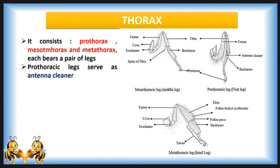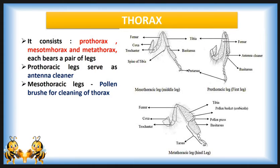In addition to locomotion, legs in honeybee are modified to perform additional functions. For example, the prothoracic legs serve as antenna cleaners. The basal part of the basitarsus has a notch, and a small lobe projects from the distal end of the tibia — this notch is called the antenna cleaner, and it is found in all three castes.